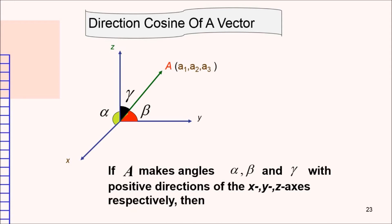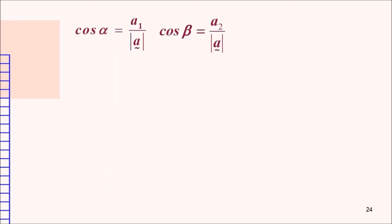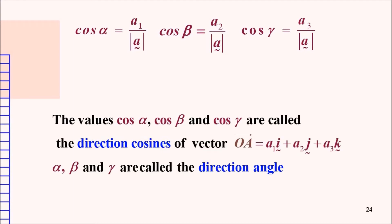If vector a makes angle alpha, beta, and gamma with the positive directions of the x, y, and z axis respectively, then this is the definition for the direction cosines. Cos alpha is given by a1 divided by the magnitude of a, cos beta is given by a2 divided by the magnitude of a, and cos gamma is given by a3 divided by the magnitude of a. These values of cos alpha, cos beta, and cos gamma are called the direction cosines of the vector. Alpha, beta, and gamma are called the direction angles.